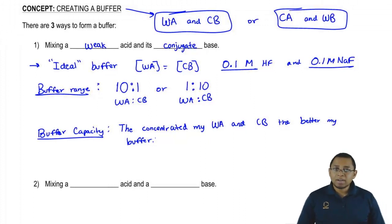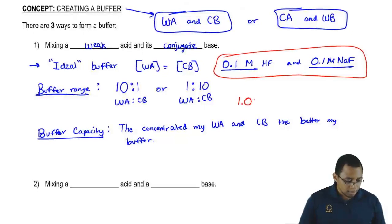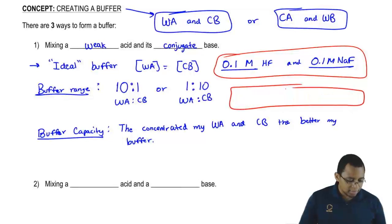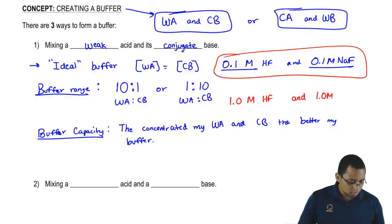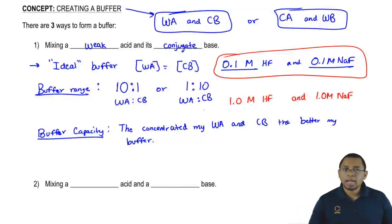The more they can better defend themselves. So here we're going to say this is good because they're both the same number. But this is better because it's more concentrated. So this has a better buffer capacity. Buffer capacity, the more concentrated the better.